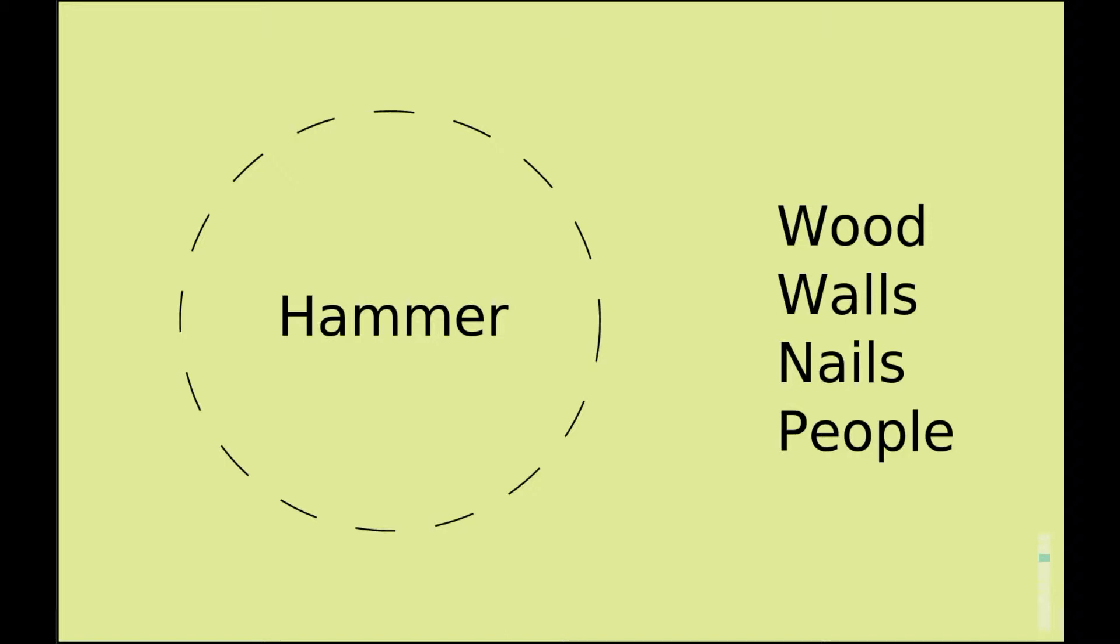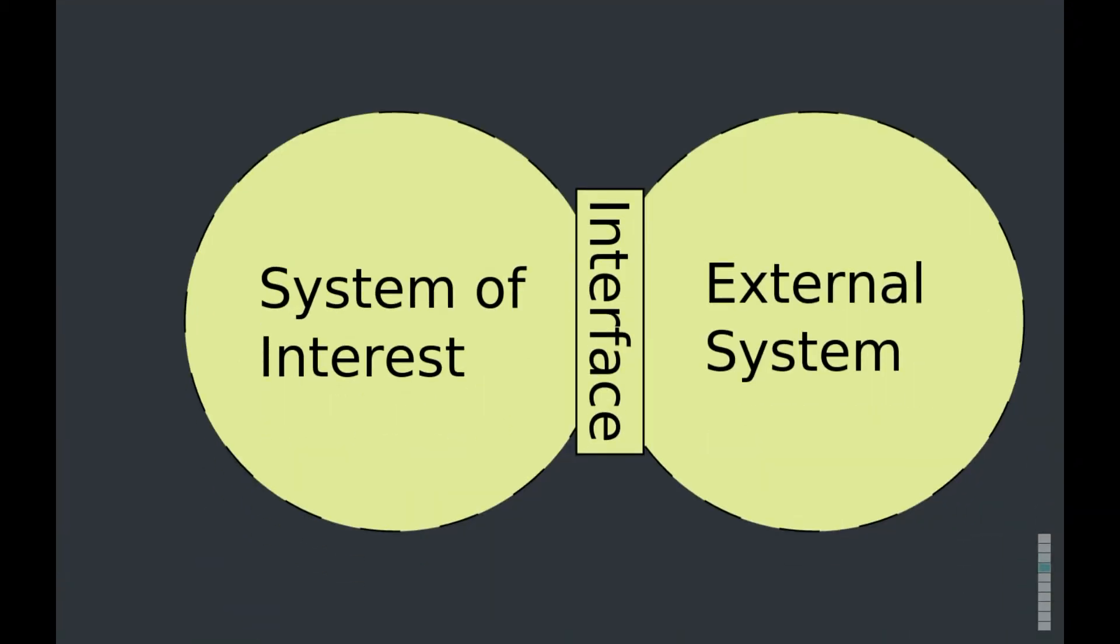When our system interacts with other systems, we call our system the system of interest. We call other systems external systems. But sometimes they touch. And I think it's called an interface. Systems interact with each other. Interfaces can exchange data and energy and materials. Like any object.